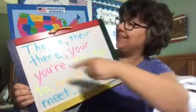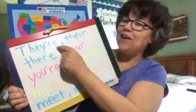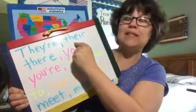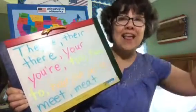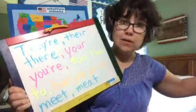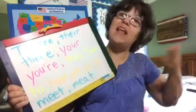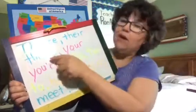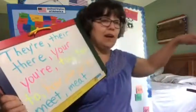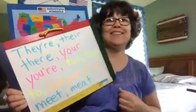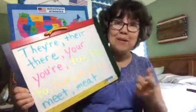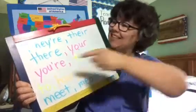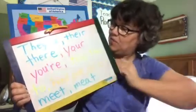They're means they are. Their means ownership — it is their house, it is theirs. And there means a location — come here, go there. That's this 'there.'